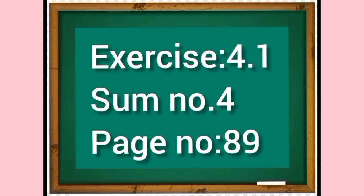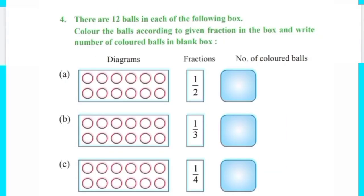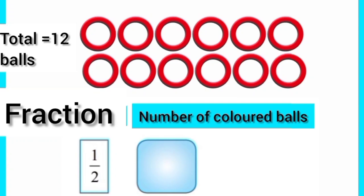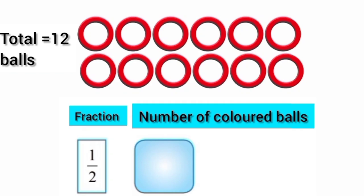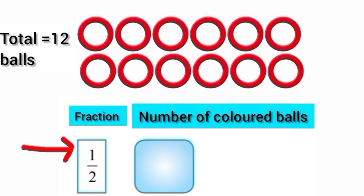Dear students, let's do sum number 4 of exercise 4.1. There are 12 balls in each of the following boxes. Color the balls according to the given fraction in the box and write the number of colored balls in the blank box. First of all, we will do part A. The total number of balls is 12 and the given fraction is 1 upon 2. It means we will divide these balls into 2 equal parts and color one part.